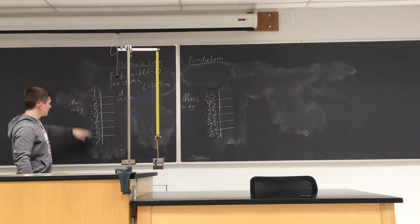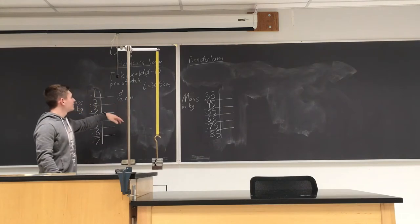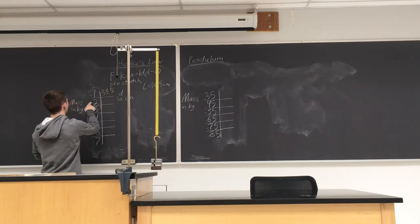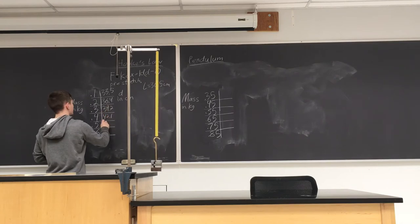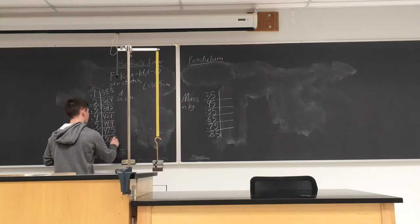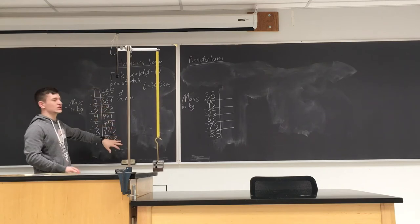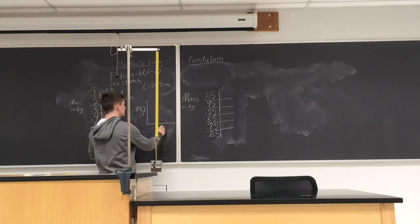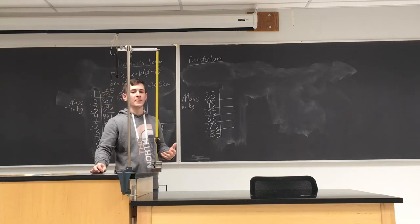We do this starting with 100 grams all the way up to 700 grams, not including the zero mass initially on there. Here is the data: at 0.1 kg it's 33.5 cm; at 0.2 kg it's 36.4; then 39.2, 42.1, 44.9, 47.5, and 50.8 cm. To find the spring constant, we graph the force applied to the spring, mg, versus D the total stretched length, and use the Excel graph to calculate K.